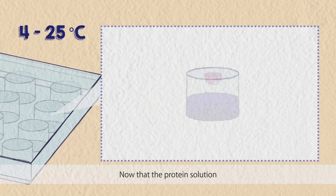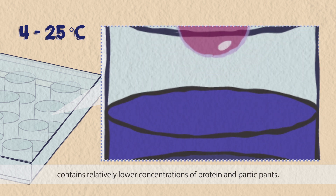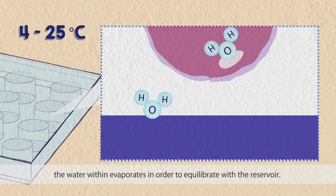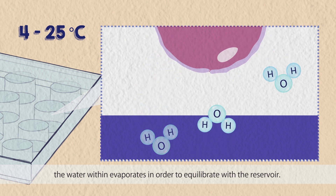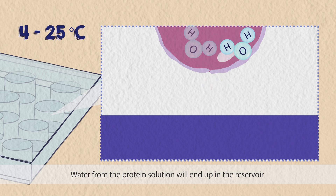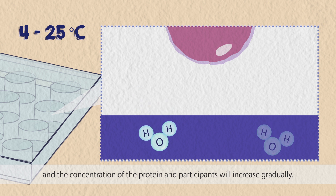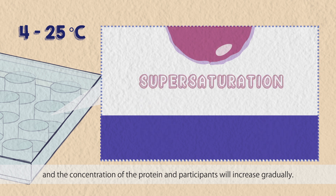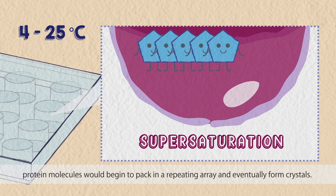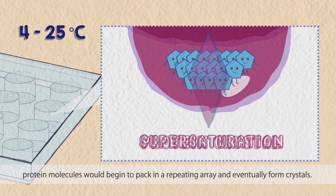Now that the protein solution contains relatively lower concentrations of protein and precipitants, the water within evaporates in order to equilibrate with the reservoir. Water from the protein solution will end up in the reservoir and the concentration of protein and precipitants will increase gradually. When the protein solution becomes supersaturated, protein molecules will begin to pack in a repeating array and eventually form crystals.